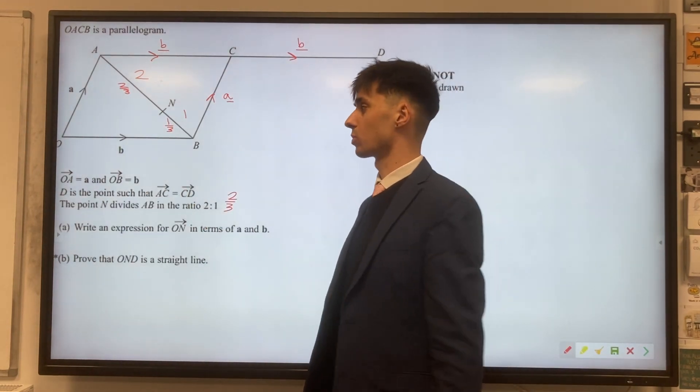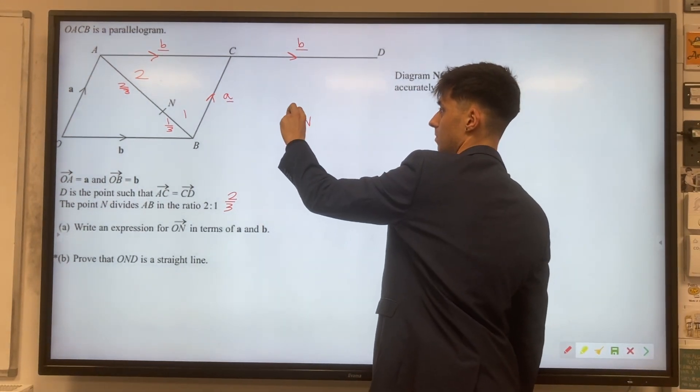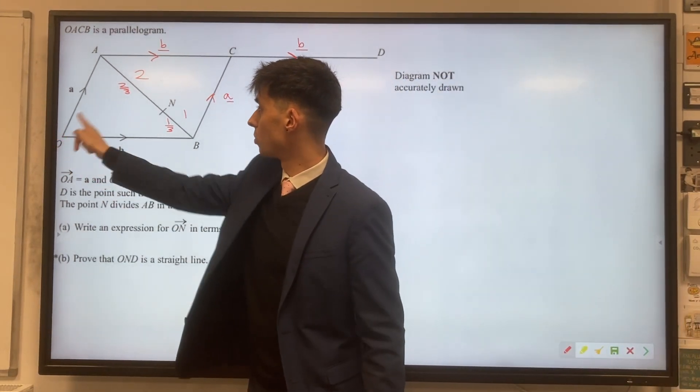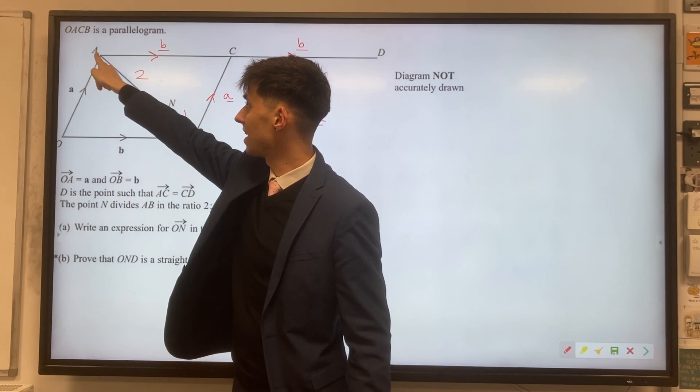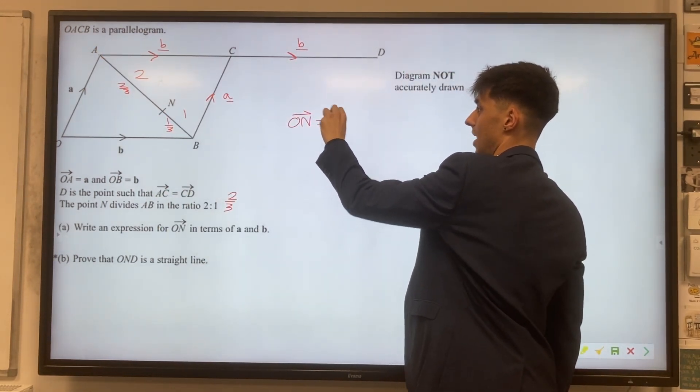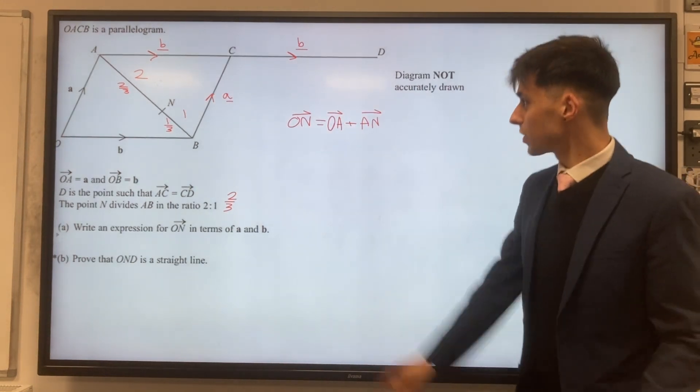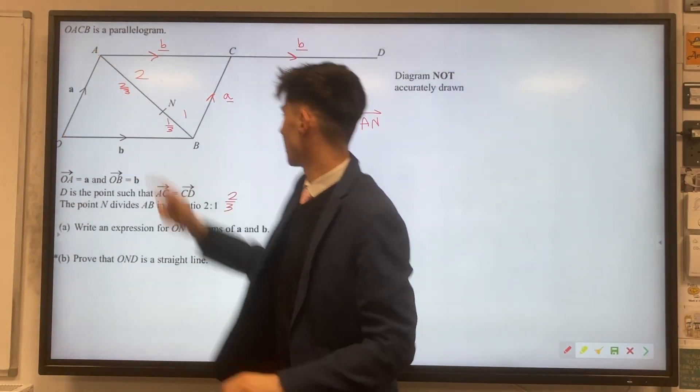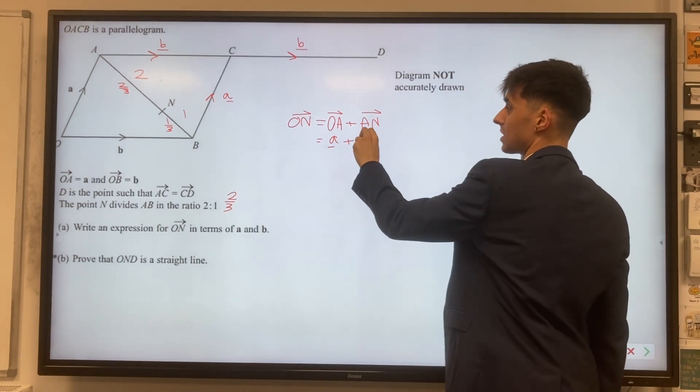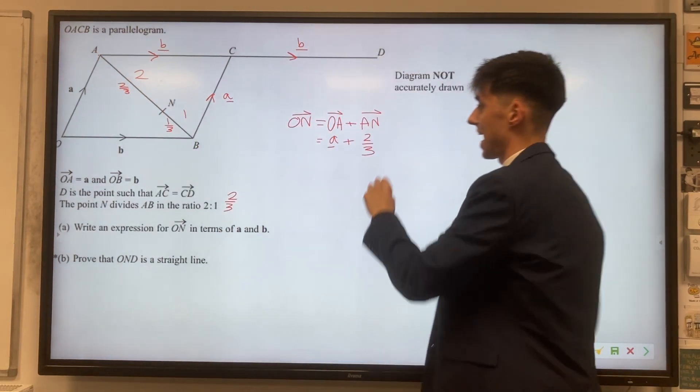Much more useful to work with fractions. So our expression for the vector O to N, let's think about how we're going to do this. To go from O to N, we're going to first have to go from O to A and then from A to N. So we're doing O to A plus A to N. To do that, from O to A we're doing our vector a, and then our A to N, this is where we're using our two-thirds. We're going two-thirds of the way from A to B.